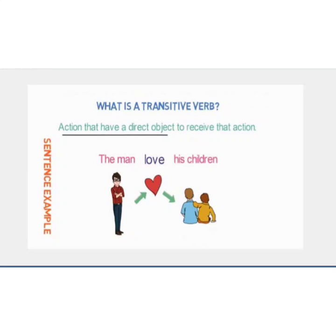Now we can see what a transitive verb is. A transitive verb is an action that has a direct object to receive that action. This can better be understood with the help of this example: 'The man loves his children.' Who is the performer of this action? The subject — the man. What is the verb? Loves. And who is the receiver? Obviously the children, who are the receivers of the man's love. So the object is the receiver of the action.